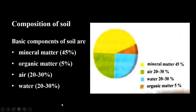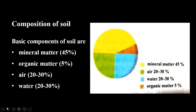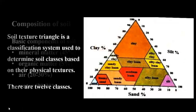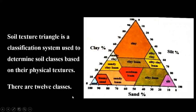The composition of soil is more compact than topsoil. Organic matter is about 5%, with mineral content at 20–30%. Now, the Soil Texture Triangle — in this video I will show you the classification system used to determine soil texture classes.